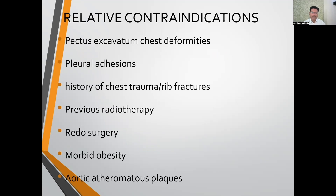Relative contraindications vary by surgeon and institution — some institutes perform cases also on the contraindication list. Relative contraindications include: pectus excavatum and chest deformities, pleural adhesions, history of chest trauma or rib fracture, previous radiotherapy, redo surgery — all of which decrease surgical exposure — as well as morbid obesity and aortic atheromatous plaque.